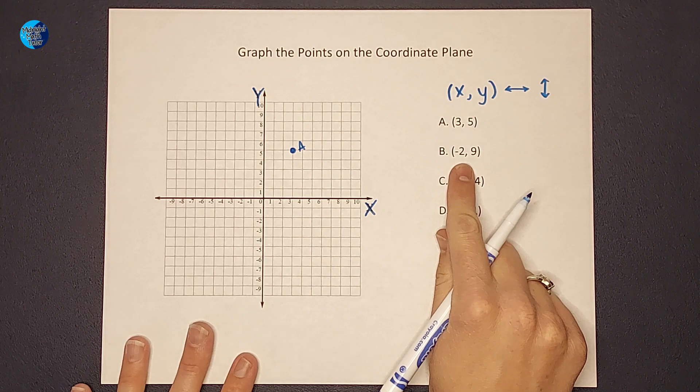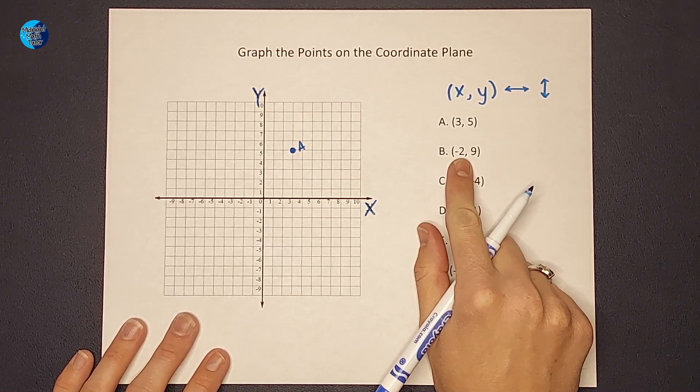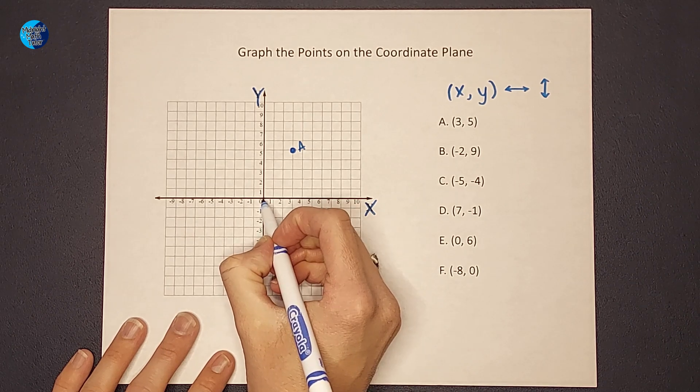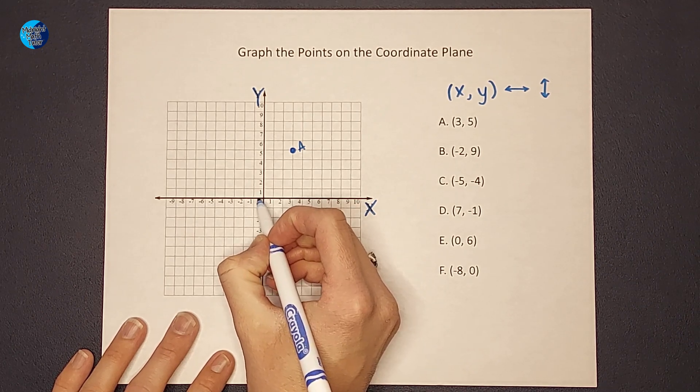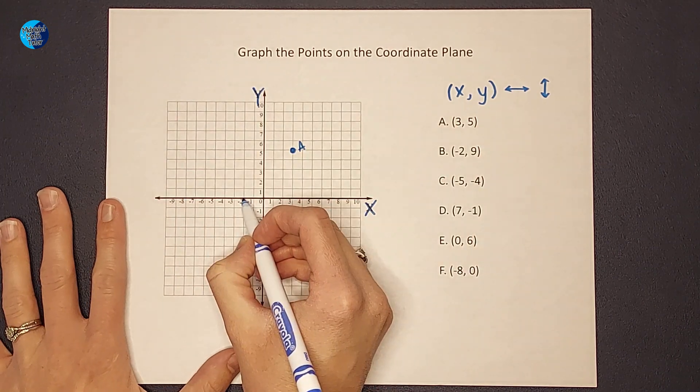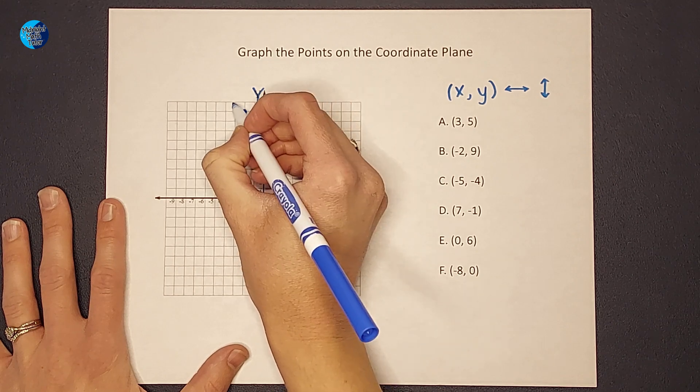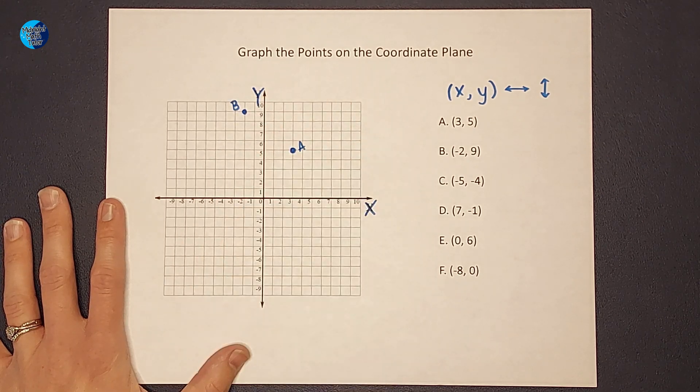Let's go ahead and look at B. Remember I do right and left first because this is a negative 2. I'm starting at 0, 0 and I'm gonna go to the left 2 because it's negative. Then the 9 is positive so I'm gonna go up 9 and that is B.